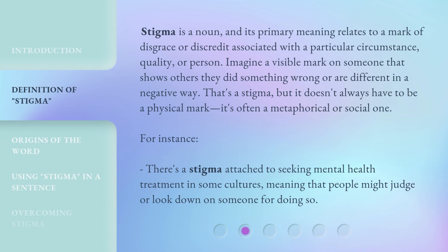Stigma is a noun, and its primary meaning relates to a mark of disgrace or discredit associated with a particular circumstance, quality, or person. Imagine a visible mark on someone that shows others they did something wrong or are different in a negative way — that's a stigma. But it doesn't always have to be a physical mark; it's often a metaphorical or social one.